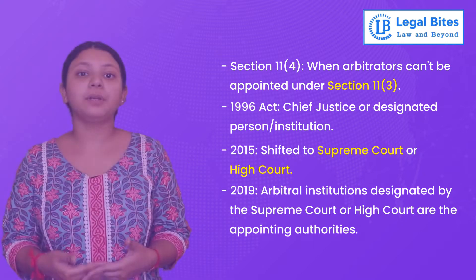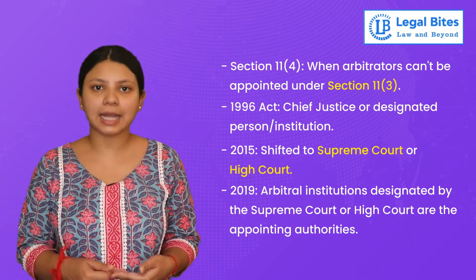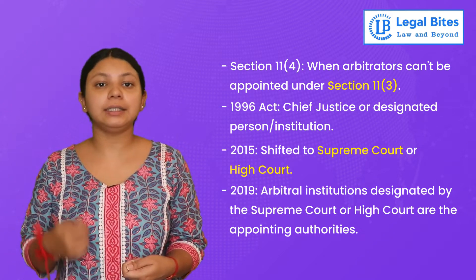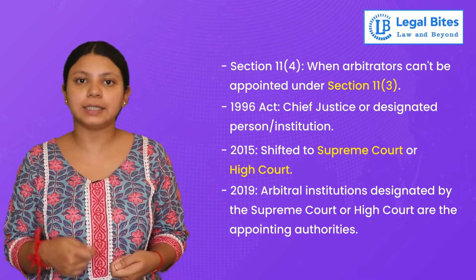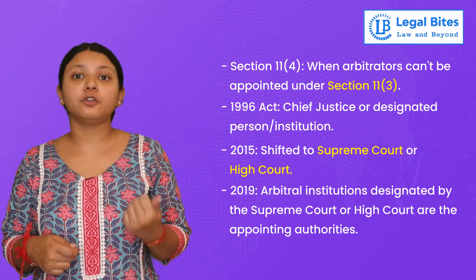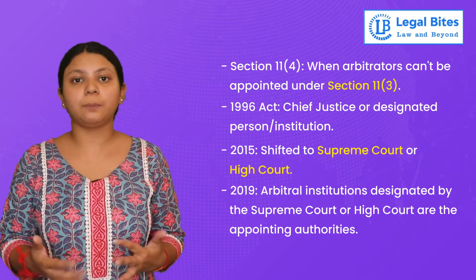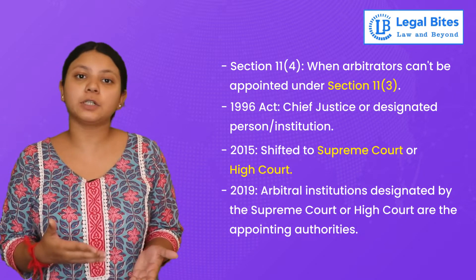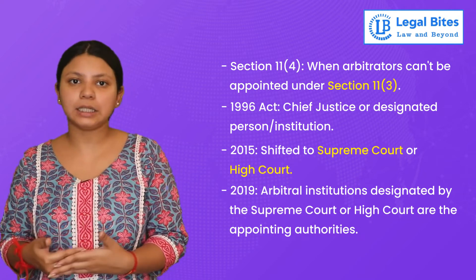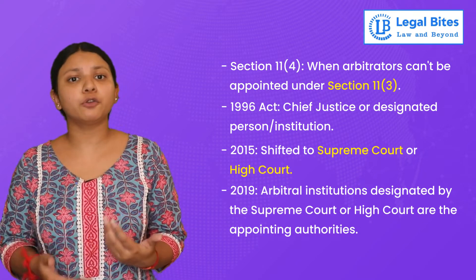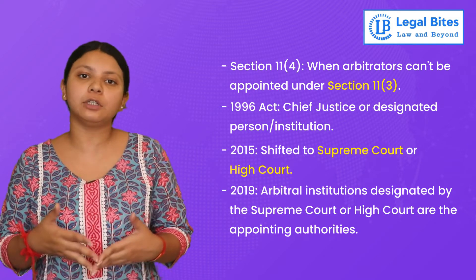After these amendments, if we trace the evolution of the appointing authority: under the 1996 Act it was the Chief Justice or any person or institution designated by him; after 2015, this authority came to the Supreme Court or High Court and any person or institution designated by those courts; and finally, the current position is that in cases of dispute or discrepancy, the appointing authority rests on the designated arbitral institutions.